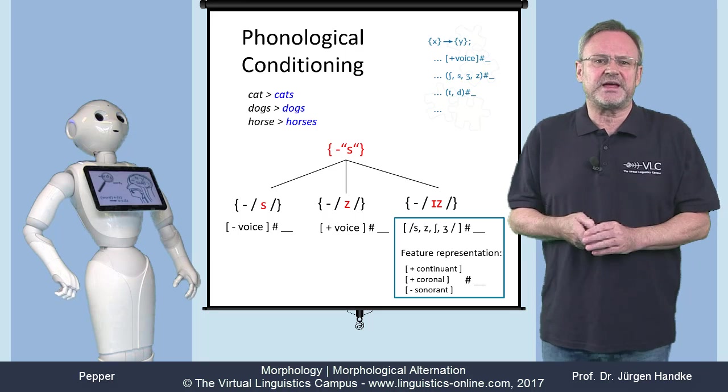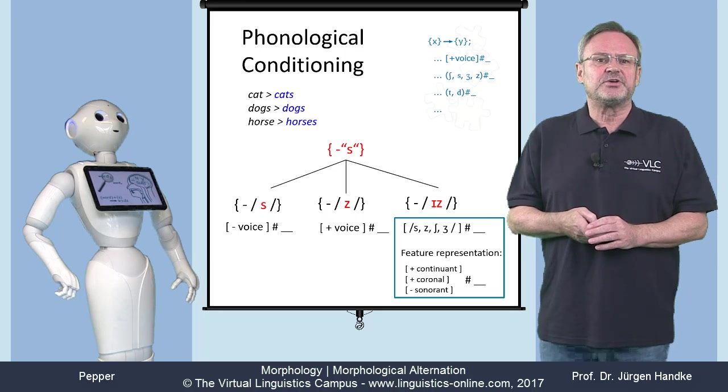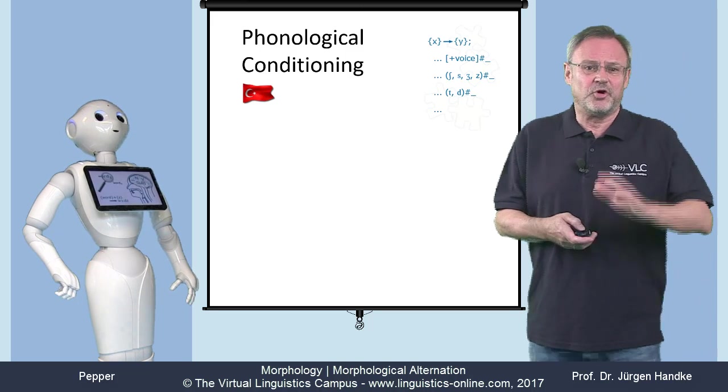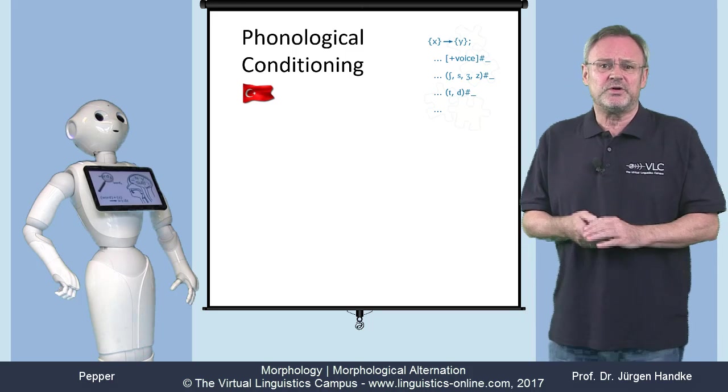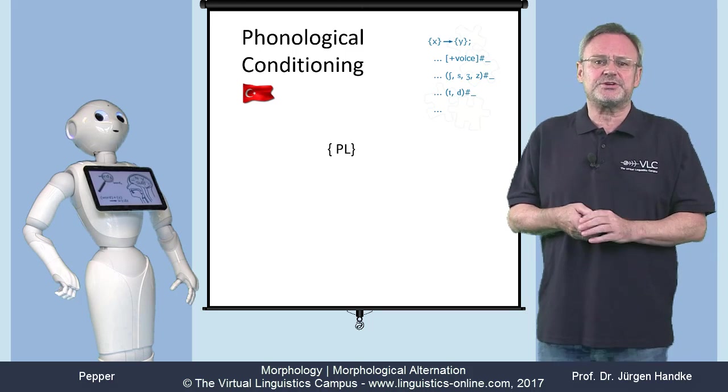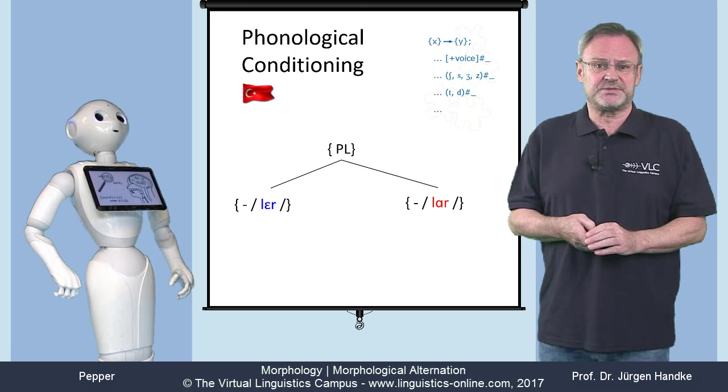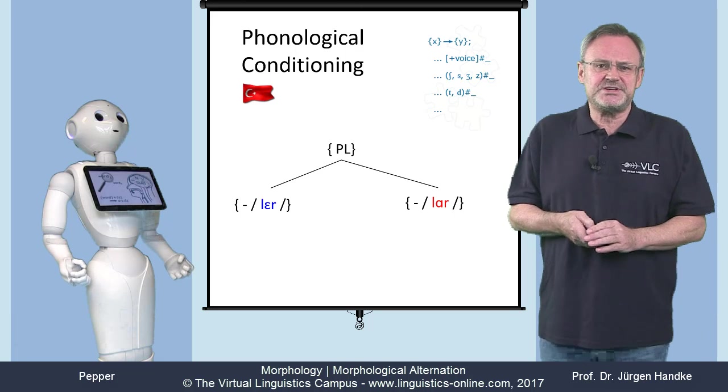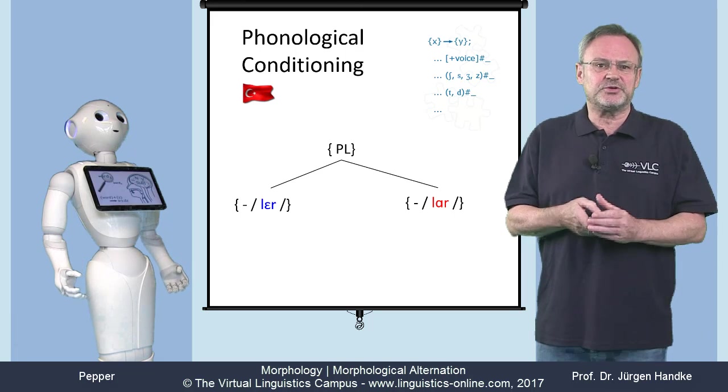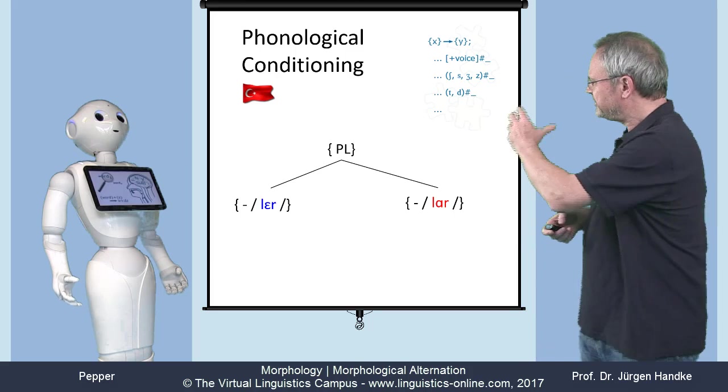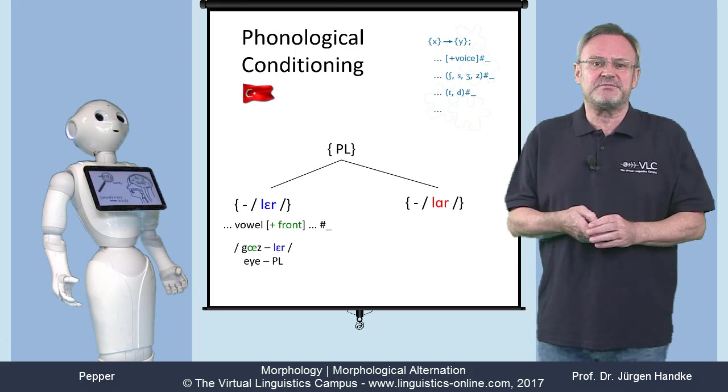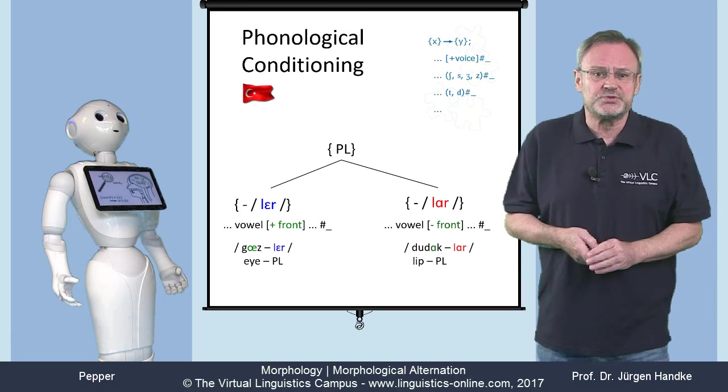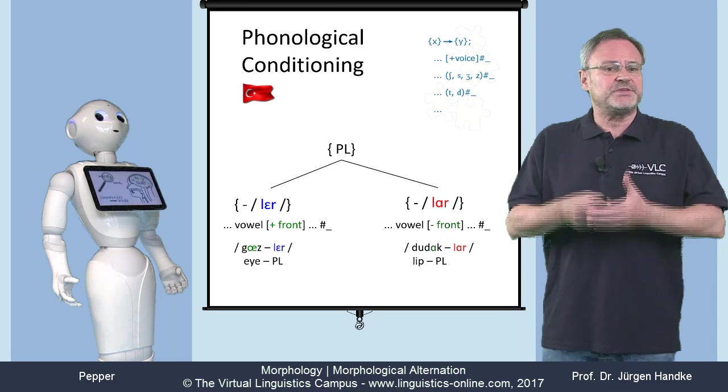Let us now look at some other languages, for example, at Turkish. Can you speak Turkish, Jürgen? No, Pepper. But as a linguist, I know that the plural morpheme in Turkish has two allomorphs: -ler and -lar. The occurrence of these allomorphs is clearly phonologically conditioned. -ler occurs if the final stem vowel is a front vowel, and -lar has to be chosen if the final stem vowel is a back vowel.